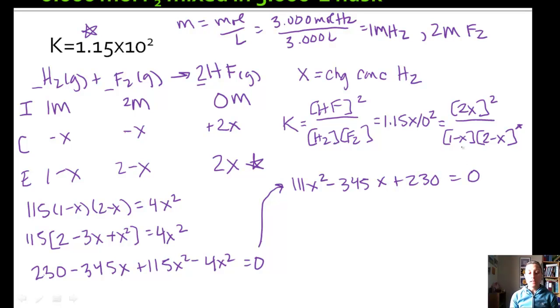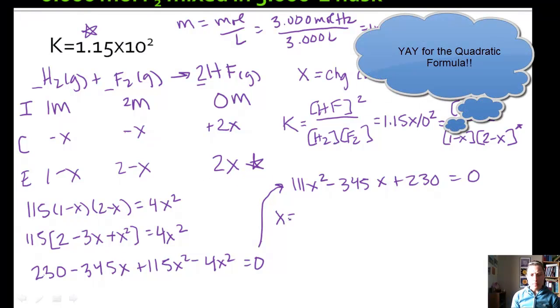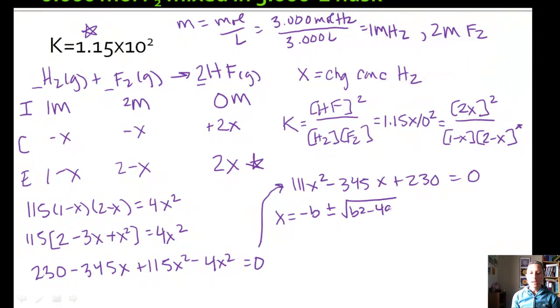Now hopefully you are thinking, oh, this is polynomial, we can find the two roots. But the easiest thing to do is going to be to use the quadratic formula. Your favorite, I know. Negative B plus or minus the square root of B squared minus 4AC over 2A. Here's A, B, and C. I'm going to spare you all of the calculations. Basically, we get two values for X. They come out to 2.14 or 0.968.